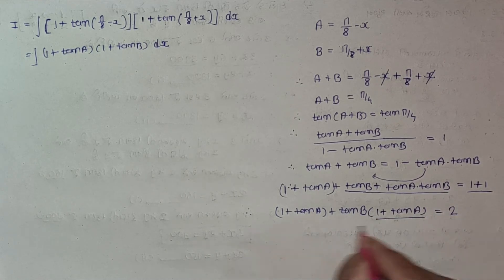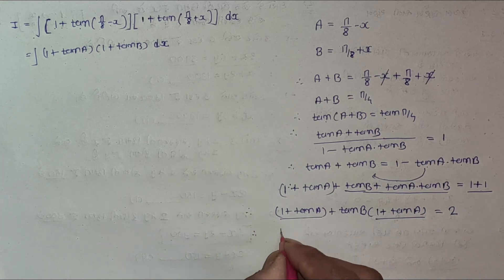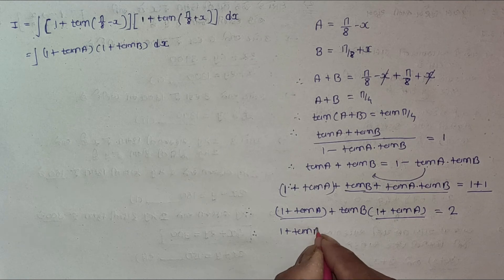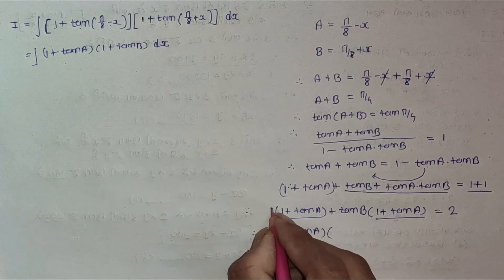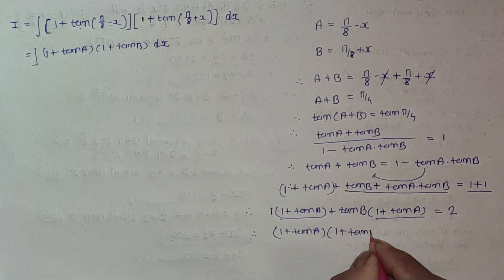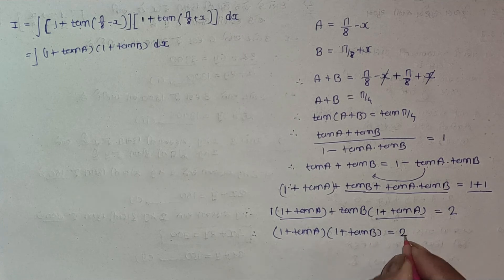Now take (1 + tan A) common. So (1 + tan A)(1 + tan B) equals 2.